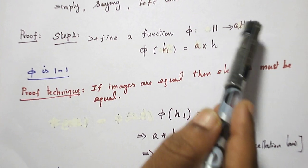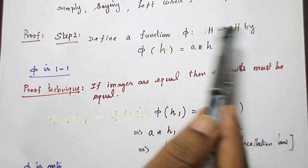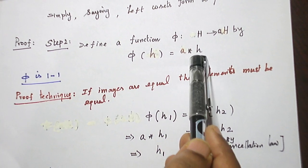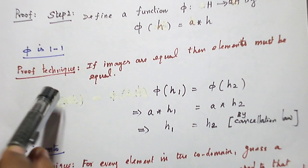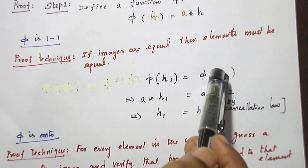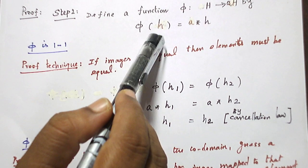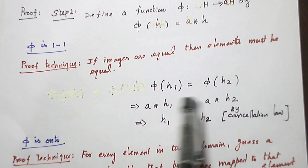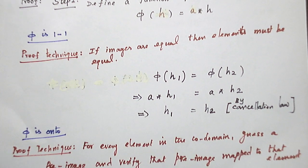Now for step two: these two sets have the same number of elements. For that, I establish a one-to-one and onto function — a bijection between H and AH. Define φ(H) = A★H. To prove it is one-one: if images are equal, φ(H₁) = φ(H₂), then A★H₁ = A★H₂. By the cancellation law, H₁ = H₂. So φ is one-one.